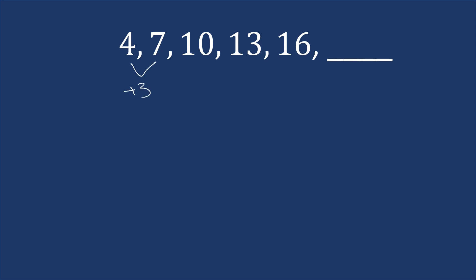You may want to start out by seeing how you get from one number to the next. Going from four to seven, that's adding three. Going from seven to ten, that's adding three. Going from ten to thirteen, that's adding three, and going from thirteen to sixteen is also adding three. So what's the pattern? Keep adding three. We assume that pattern continues, we add three to sixteen, and get nineteen for the next number.